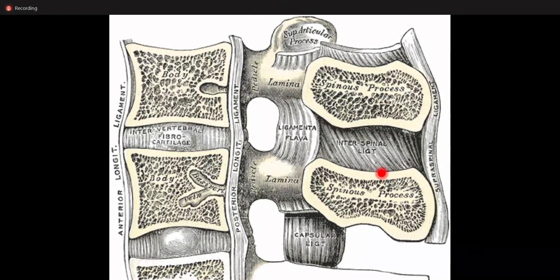What you can see here is this: the spinous process up, and this is the spinous process below. So the ligament that is there between the two spinous processes is the interspinous ligament. This ligament is quite thin as compared to the supraspinous ligament.